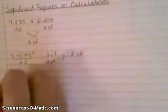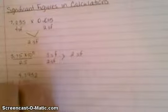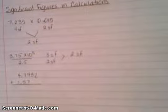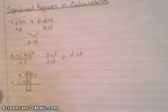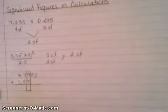Now what if I have an addition example? Let's say I have 4.7932 plus 1.57. The rules are a little different. First you want to find the last place that both numbers have in common and put a box around it. This is the last place that your final answer can have a number in.